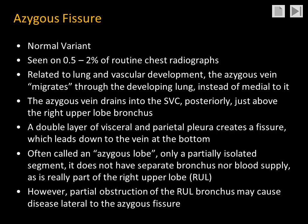Its formation is related to the development of the normal lung and the surrounding vasculature. In a patient who has an azygous fissure, the azygous vein abnormally migrates through the developing lung instead of medial to it. The azygous vein drains normally into the posterior superior vena cava, just above the right upper lobe bronchus.